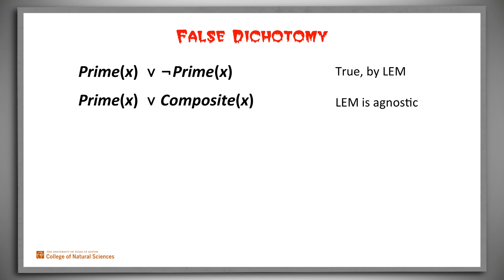Composite is almost, but not quite, equivalent to not prime. It is equivalent for integers greater than 1. But for example, the claim that 1 is prime or composite is false. It's neither.